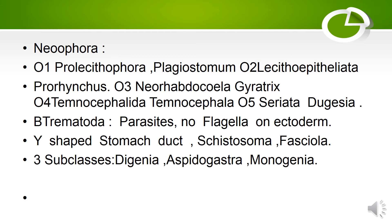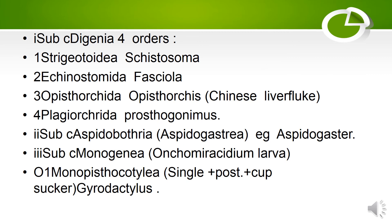Trematoda: these are parasites. No cilia on ectoderm. Wheel-shaped suckers and ducts are present. Examples: Schistosoma and Fasciola. Three subclasses: Digenea, Aspidogastrea, and Monogenea. Subclass Digenea — four orders: Order 1: Strigeoidea, example: Schistosoma. Order 2: Echinostomida, example: Fasciola. Order 3: Opisthorchida — example: Opisthorchis, also known as the Chinese liver fluke.